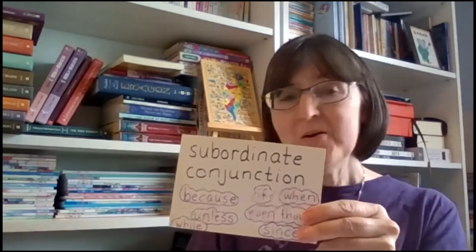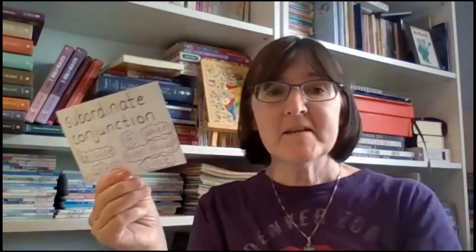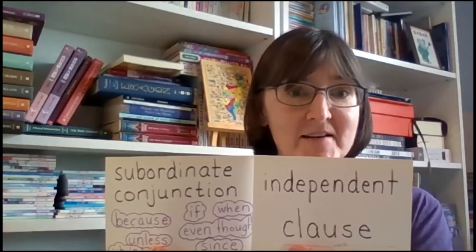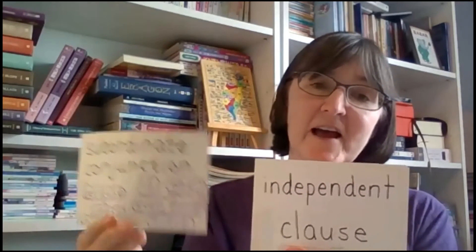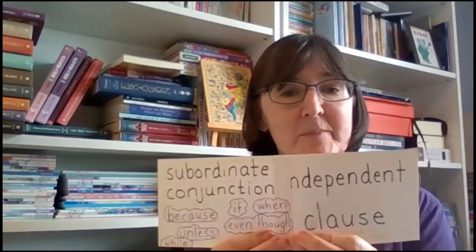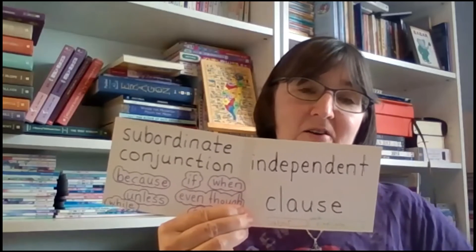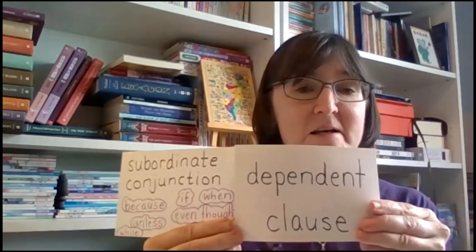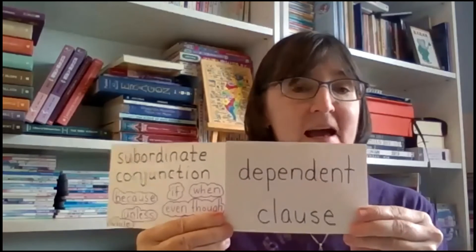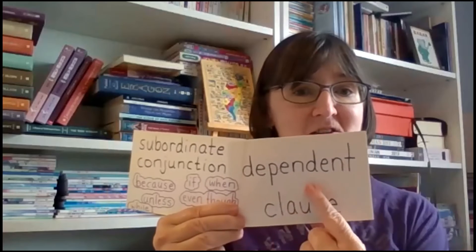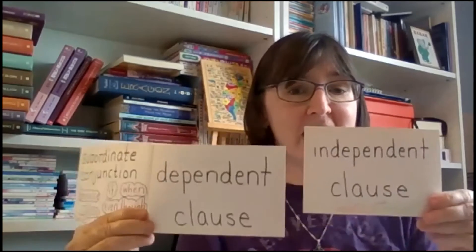When we use a subordinate conjunction, we attach it to the beginning of an independent clause. So we take a sentence like 'It is hot.' If I take a word like 'because' and put it at the beginning — 'because it is hot' — this cannot be an independent sentence anymore. 'Because it is hot' does not give me a complete thought. It cannot be a sentence all by itself. So if I add the word 'because' to 'it is hot,' I no longer call it an independent clause — I call it a dependent clause.